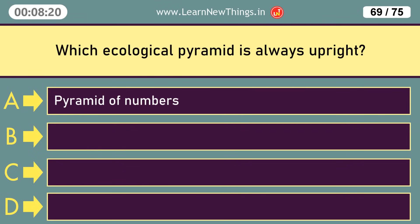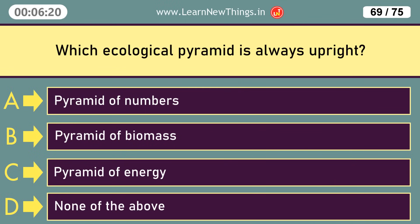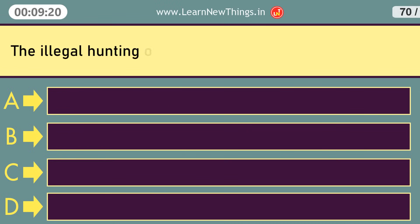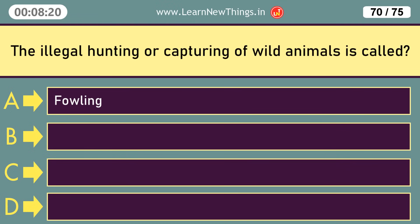Which ecological pyramid is always upright? Pyramid of energy. The illegal hunting or capturing of wild animals is called Poaching.